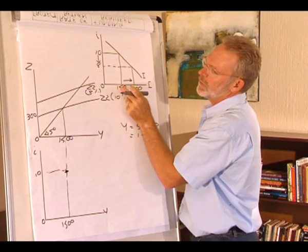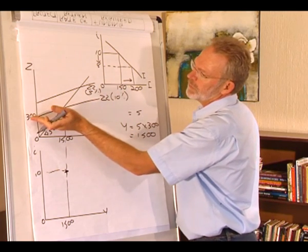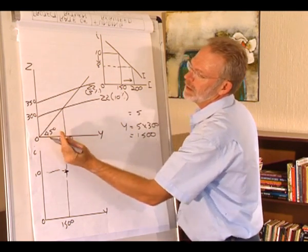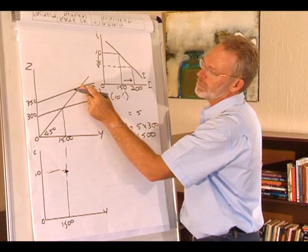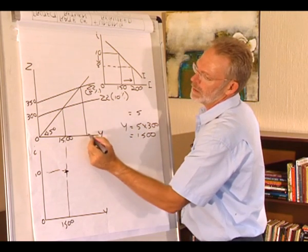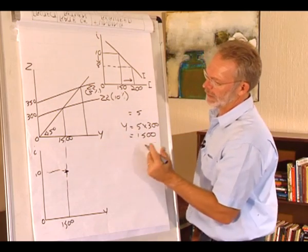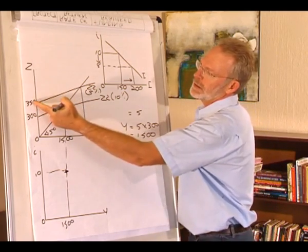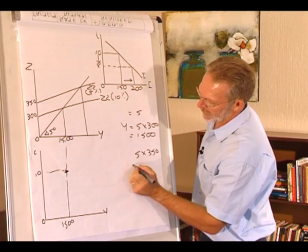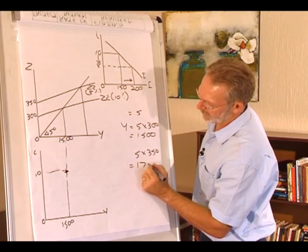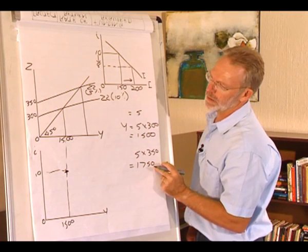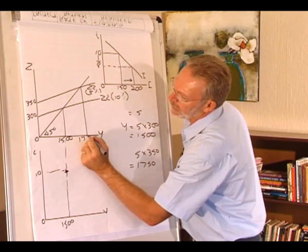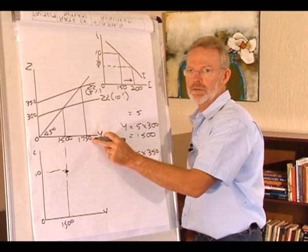Investment increased by 50, so autonomous investment increased to 350. And the equilibrium level of income? How would you calculate that? Again, 5 times, but now it's 350, and that is equal to 1750. So the equilibrium income level in the economy increased to 1750.